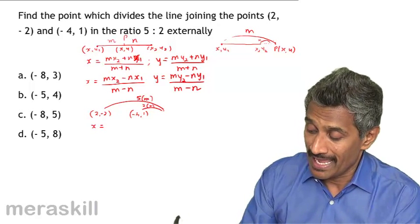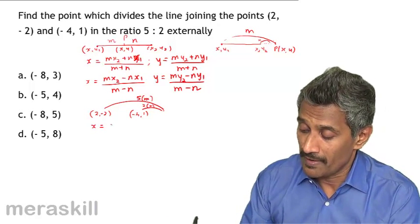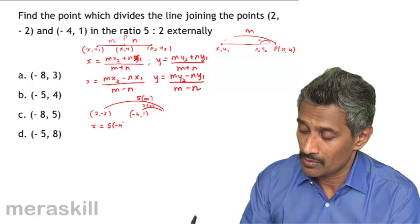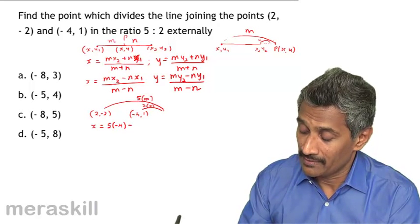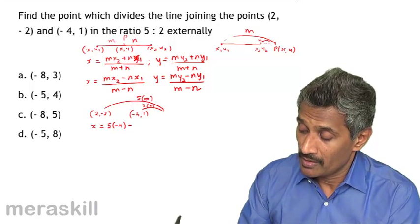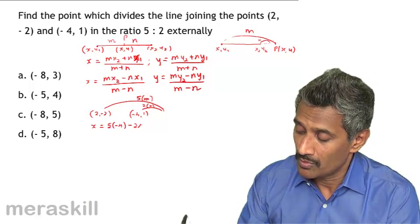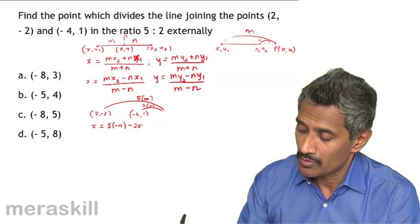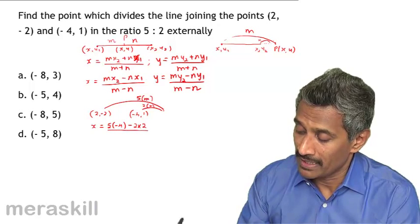So the x coordinate is going to be M x2, 5 into -4, minus N, that is 2 into 2, upon M minus N, 5 minus 2.